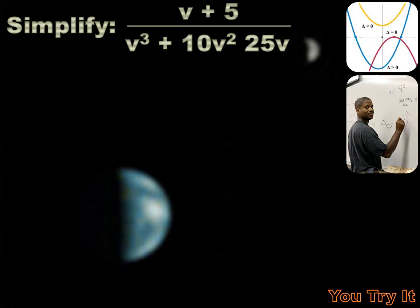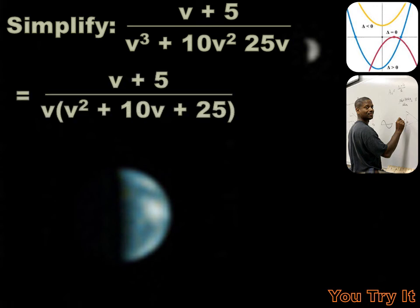We're asked to simplify this expression. So the first thing I want to do is see what I can factor. See if I can simplify the numerator and can I simplify the denominator. Well, I can't really simplify v plus 5, but I can factor the denominator. I can see that in each of those terms, I've got a v. So I could pull that v out. I can undistribute it and rewrite this expression as v plus 5 over v times v squared plus 10v plus 25.